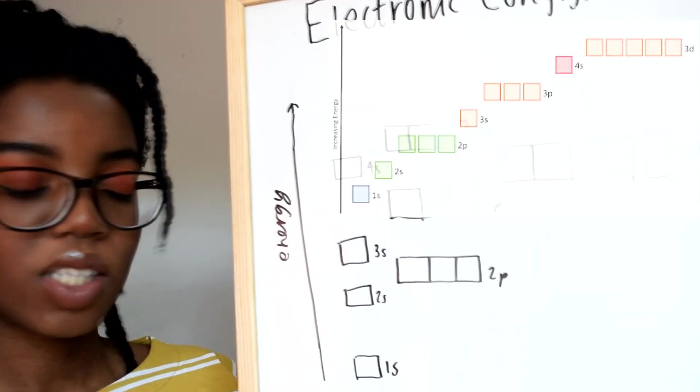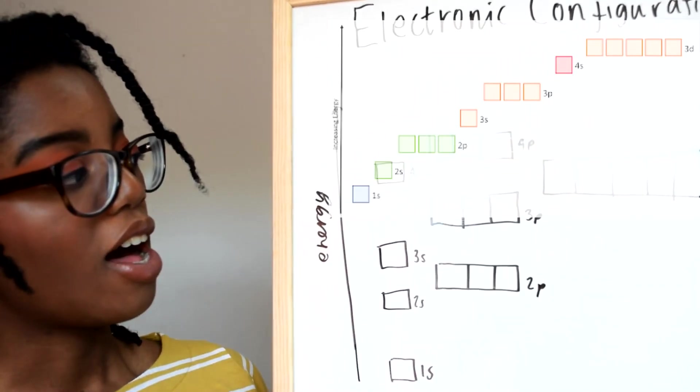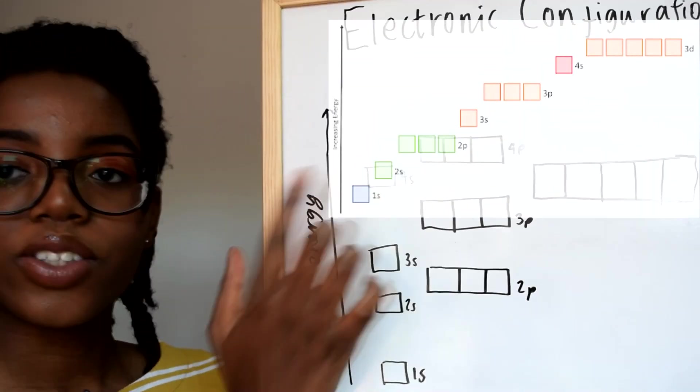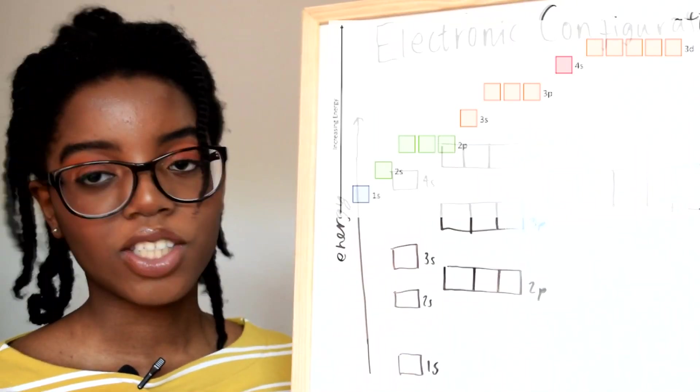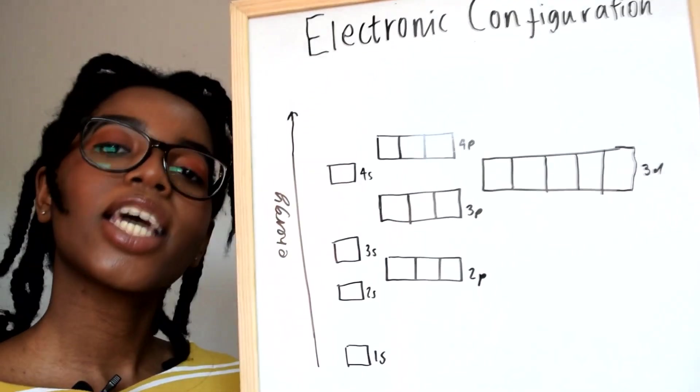As you can see, 1s has really low energy and 4s has higher energy just due to the electrons in the shell.